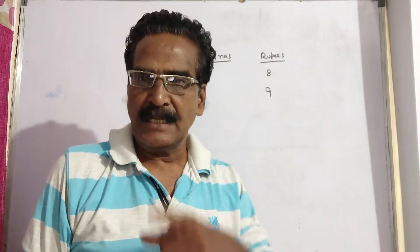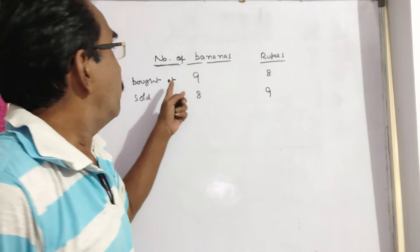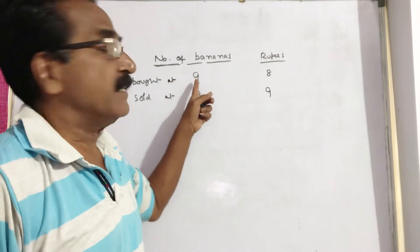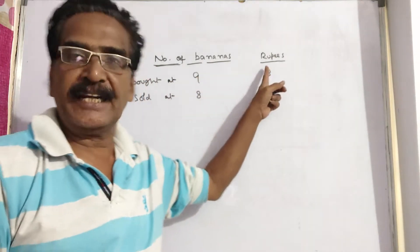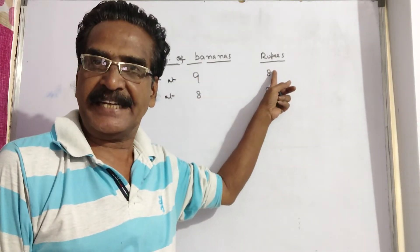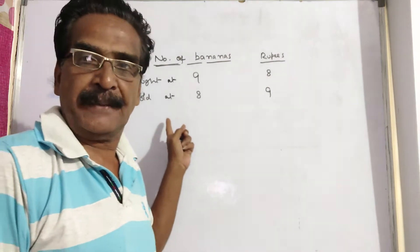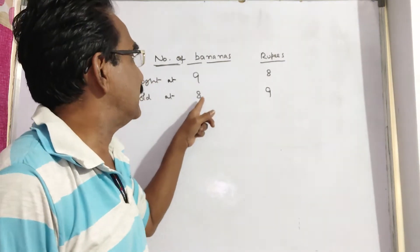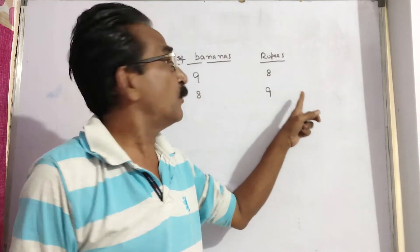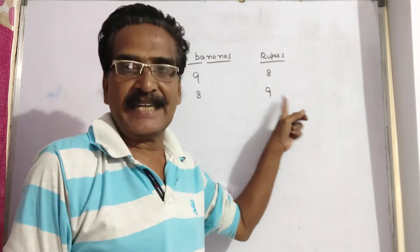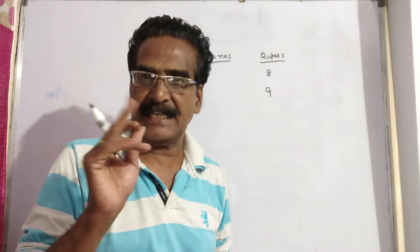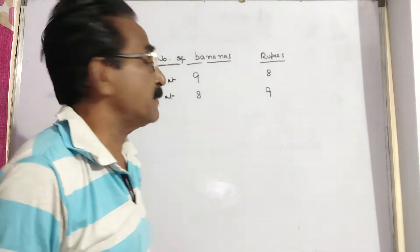Hi friends, good morning. Please look at the next problem in profit and loss. The problem is given in the description box. A vendor buys 9 bananas at Rs. 8 and sells them at 8 bananas for Rs. 9. What is the profit percent?